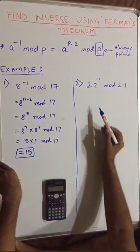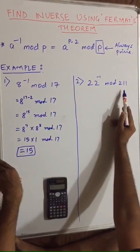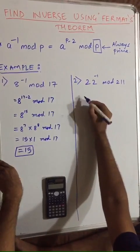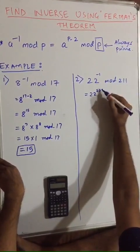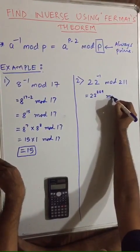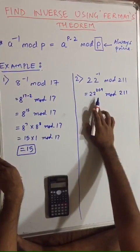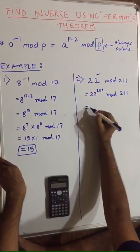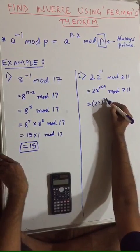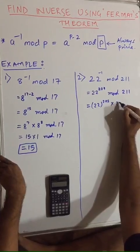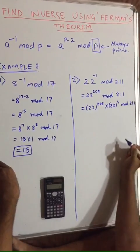So by solving this, we can say that 8 inverse mod 17 is 15. Now let us move to another example: 22 inverse mod 211. 211 is again a prime number. So we can write it as 22 raised to 209, which is 211 minus 2 by our formula, mod 211. Now we have to factorize 22 raised to 209. We can factorize it as 22 raised to 205 into 22 raised to 4 mod 211.